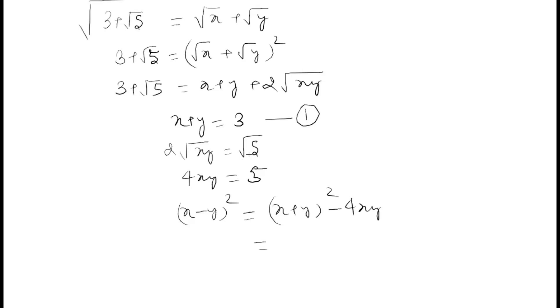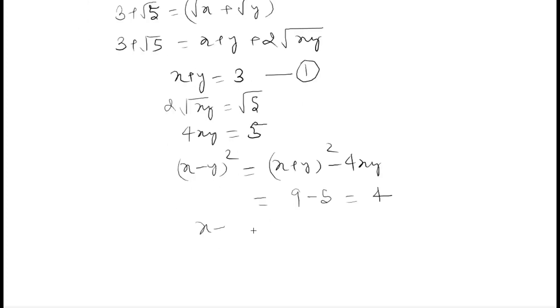So x plus y whole square is going to equal 9. 4xy is going to equal 5. So this is going to equal 4. So my x minus y, I have to take the positive 1, so I will take 2. And this is going to be my second equation.